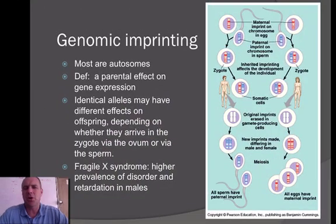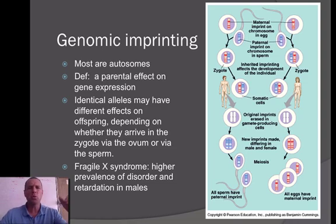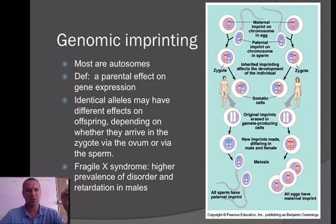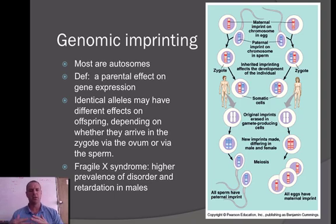The last thing is called genomic imprinting — it's when, depending on which parent gives you the gene, it's expressed differently. An example is Fragile X Syndrome: if daddy gives it to you, then you have a higher likelihood — if you're male — of it showing up as a form of intellectual disability.